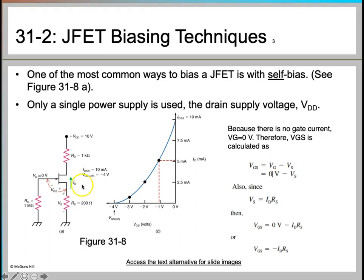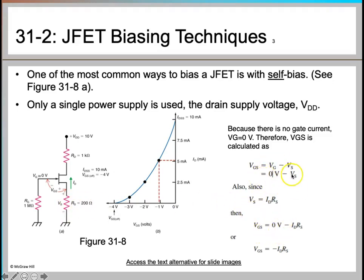Applying KVL for the self-bias circuit: because there is no gate current, VG equals zero volts. Therefore VGS equals VG minus VS. Since VG is zero, VGS equals negative VS. And VS equals ID·RS, since there is drain current flowing through RS. So VGS equals negative ID·RS — that's how you calculate VGS in self-bias.